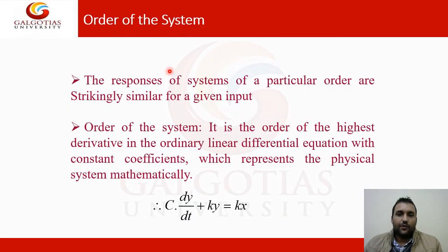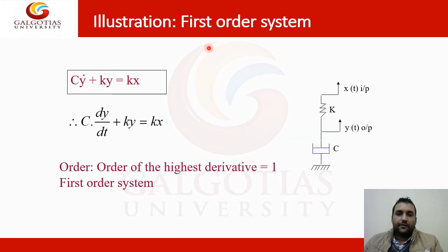Next is the order of the system. The response of a system of a particular order are strictly similar to given in force. The order of the system, it is the order of the highest derivative in ordinary linear differential equation with constant coefficient, which represent the physical system. C dy/dt plus ky is equal to kx. This is the ordinary system of a system. Next is the first order system. This is a one spring and with a damper attachment is there. C y first derivative plus ky is equal to kx. This is the first order equation. C into derivative dy/dt plus ky is equal to kx. This is the first order equation because the highest derivative is equal to y. This is the first order equation or first order system.